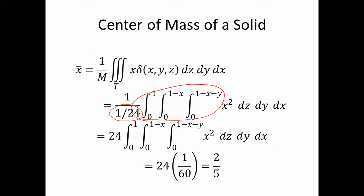Now, x times delta of xyz. Since delta, the density is x, x times x is x squared. So when we evaluate this integral, we're going to get 1 60th and 1 over 1 24th. That's just going to be 24. So we end up with 24 times 1 60th, which is 2 5ths.